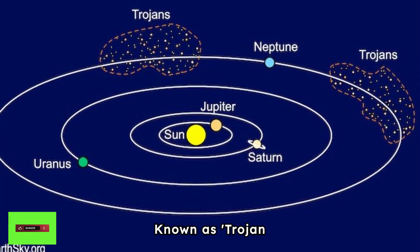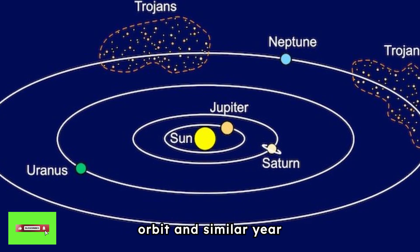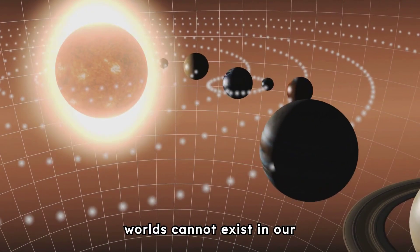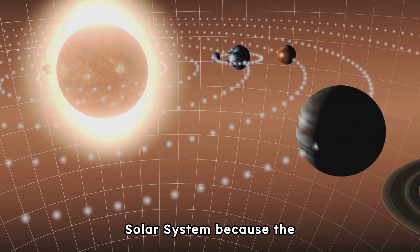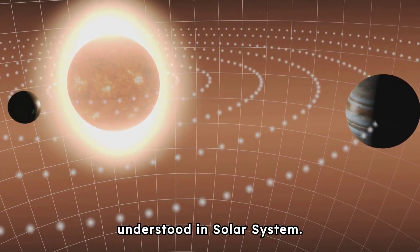Known as Trojan planets, these twin planets could possess similar conditions due to their shared orbit and similar year durations. However, such worlds cannot exist in our solar system, because the gravitational interactions between planets are well understood.